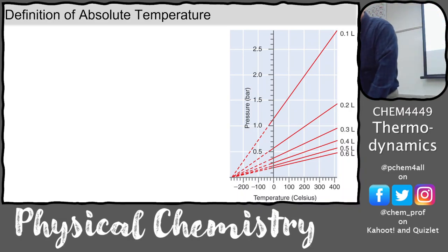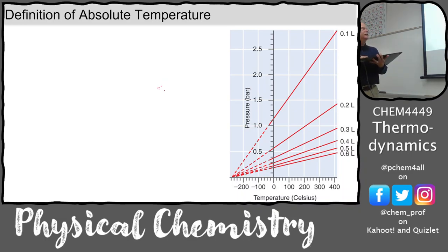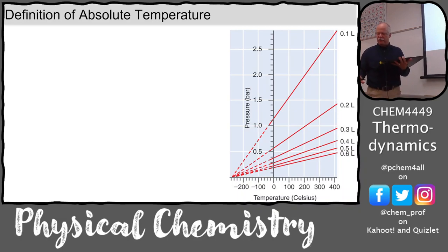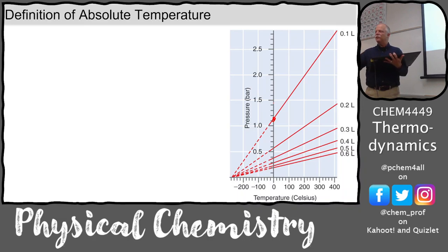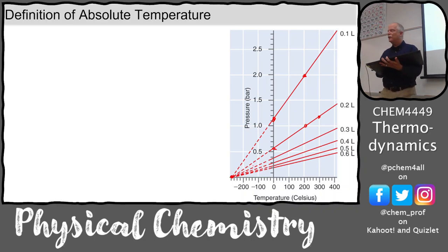If we measure the volume of a balloon in ice water and then in warm water, we get two data points. We can extrapolate to where the volume goes to zero. If we do this with a smaller balloon, we get two more data points and extrapolate — and we get the same temperature. It always hits the same point at minus 273.15 degrees Celsius if you want to be precise.